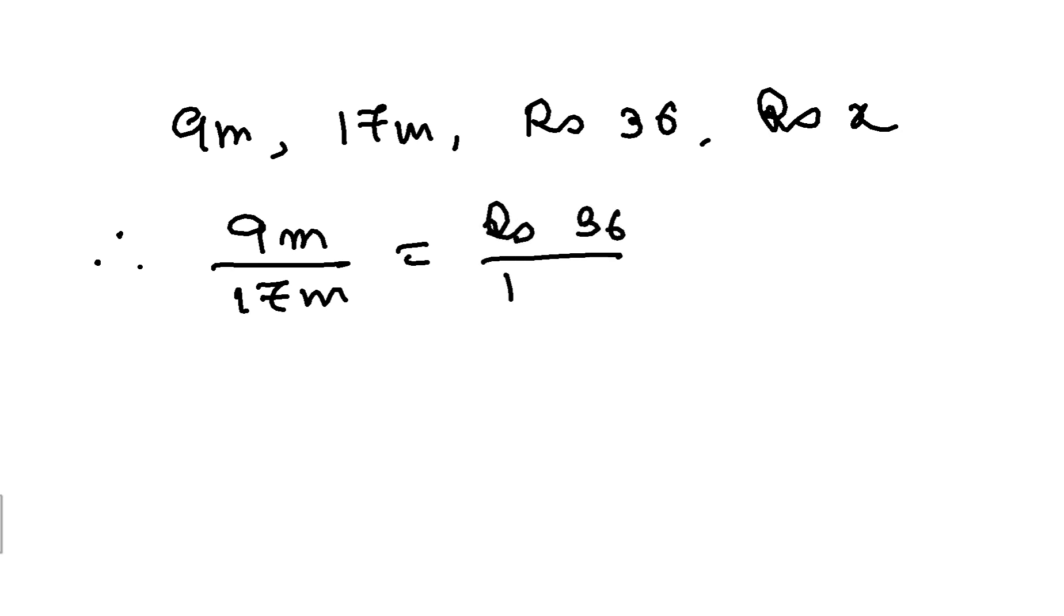Now if I apply the concept of proportion, let me write the numbers again. My numbers are 9 meter, 17 meter, rupees 36, and rupees X. So if I apply the concept of proportion here, I will have 9 meter by 17 meter is equal to rupees 36 by X.